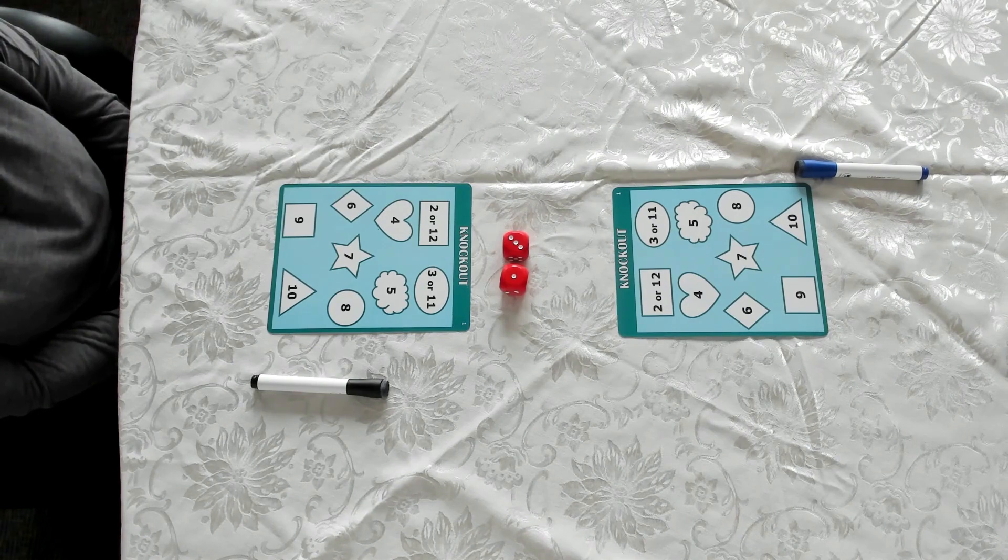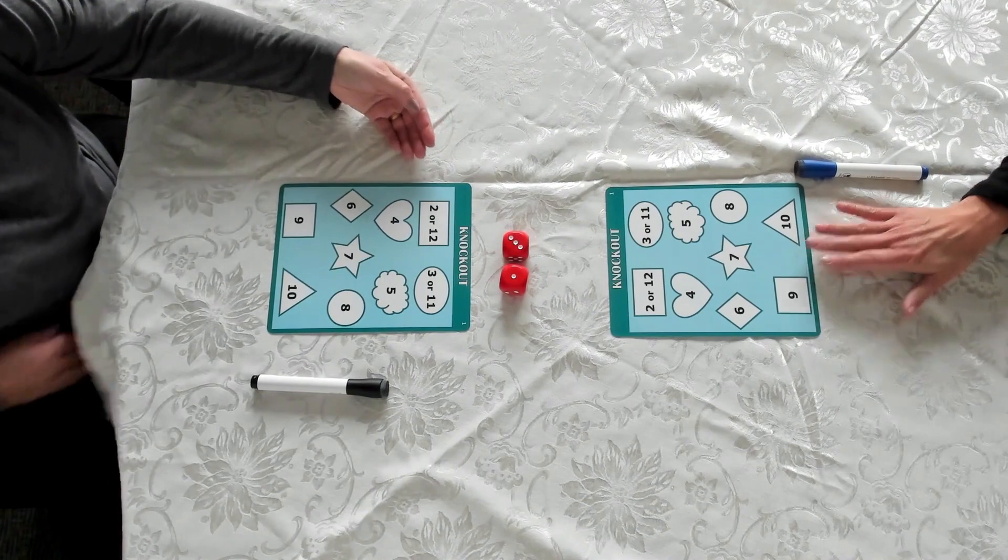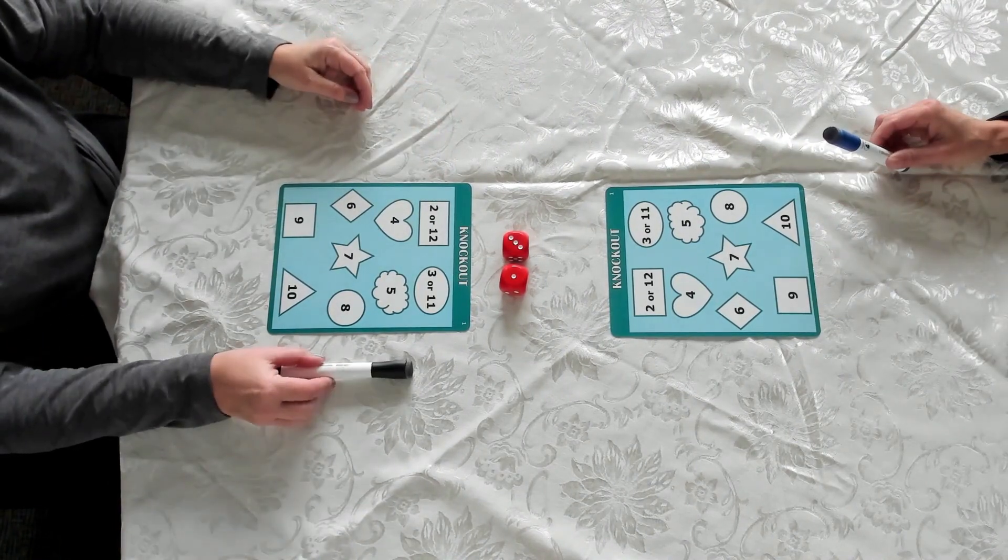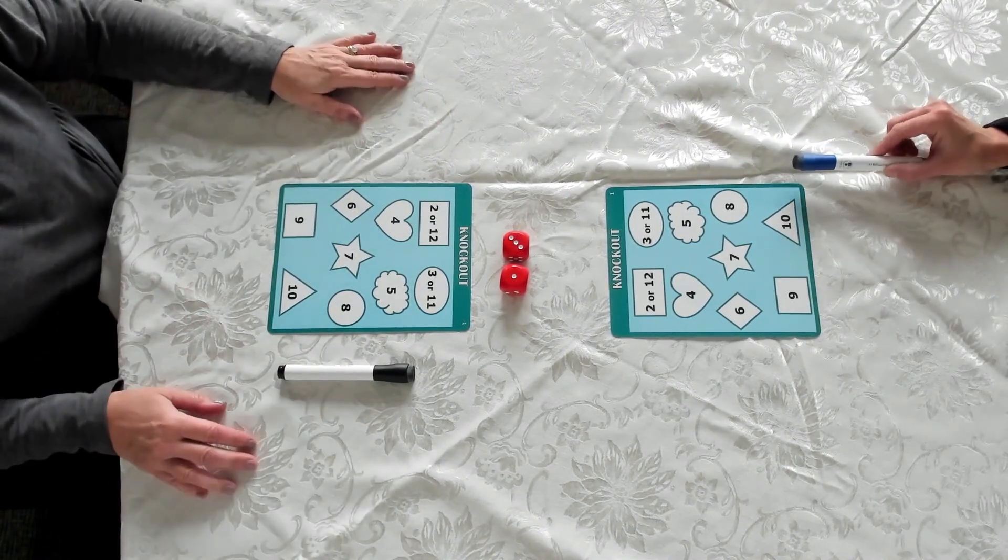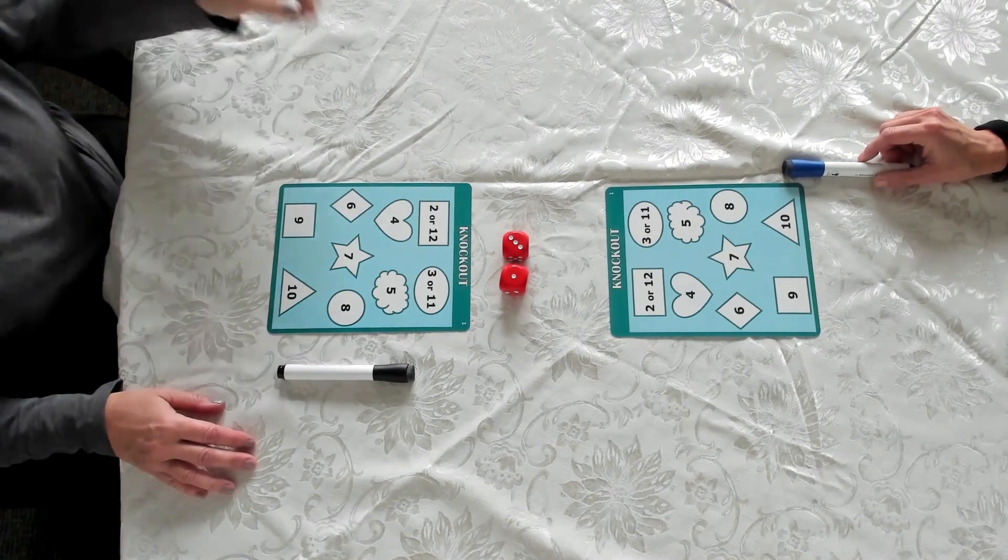Each player will have a card, a player card, and should have a marker. These are dry erase markers. You want to use those with an eraser on it so you can play the game over and again. And then you'll have two die.